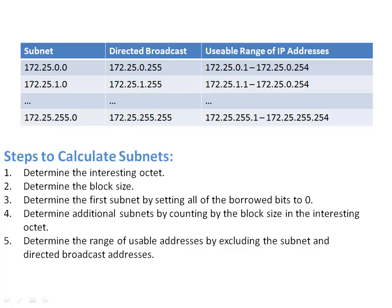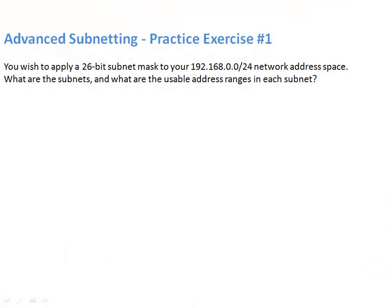Using these steps, let me challenge you with a scenario. Let's say you want to apply a 26-bit subnet mask to a class C network of 192.168.0.0/24. What are the subnets, and what are the usable address ranges in each subnet? You might want to pause the video here and go through those steps. After you finish your calculation, come back and join me and we'll go through the answer.